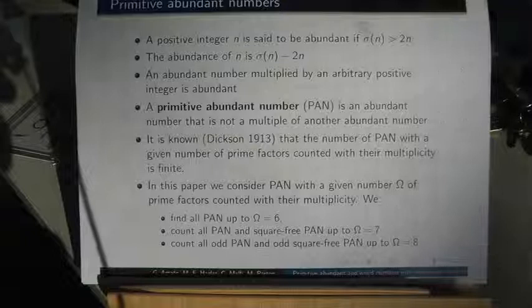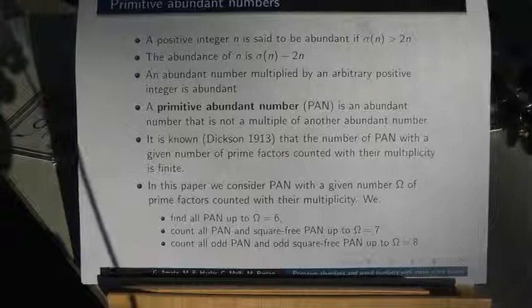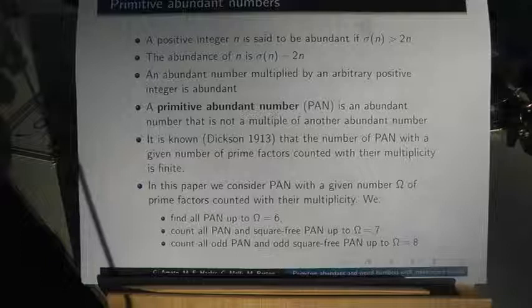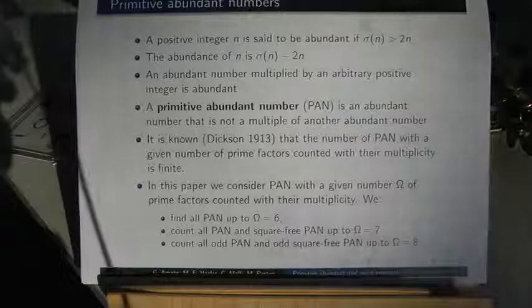A positive integer n is said to be abundant if the sum of its proper divisors exceeds n. The abundance is the difference between the sum of its proper divisors and n itself.